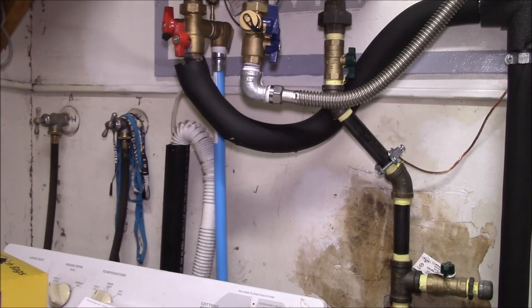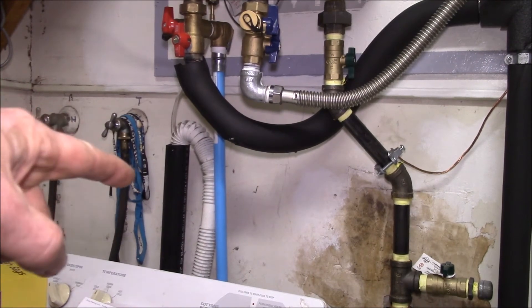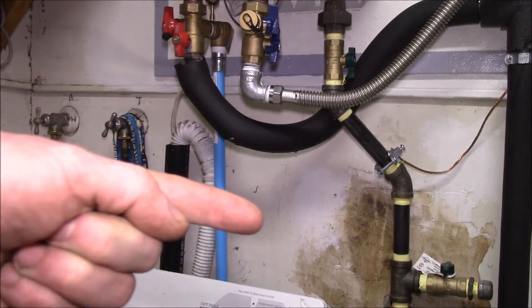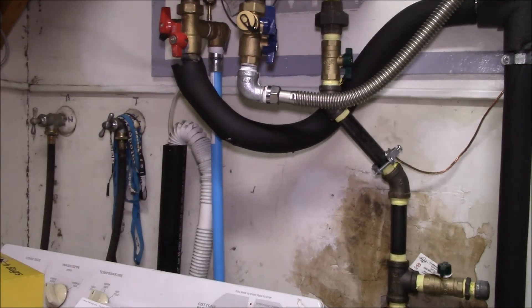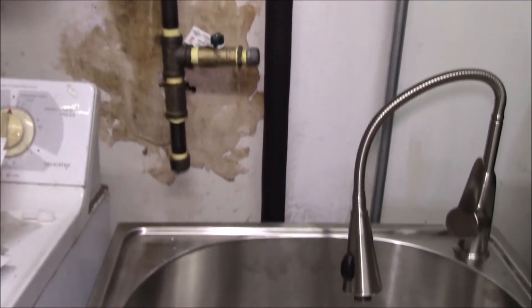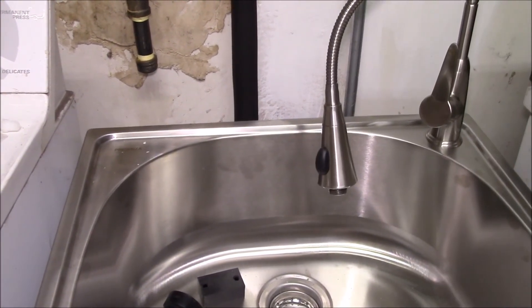Anyway, I still need to get in here behind the clothes washer because I need to get to the drain pipe there and add a tee, so I can come over here to where I'm going to mount the utility sink, which I have right down here just mocked up.